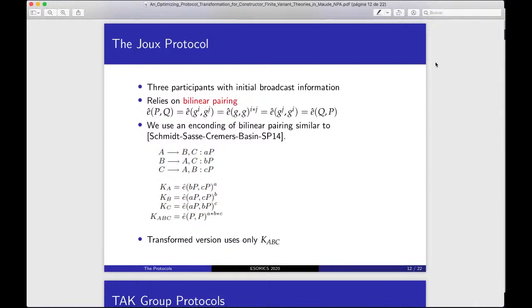Next, the JOCKES protocol is a three-participant with initial broadcast information, relies on bilinear pairing. Here, the function E with the arguments P and Q is equal to the function E with the arguments Q and P. We use an encoding of bilinear pairing similar to Schmidt, Sasse, Kremer and Bacelar from ASIACCS14. And the transformed version uses only the key KABC.